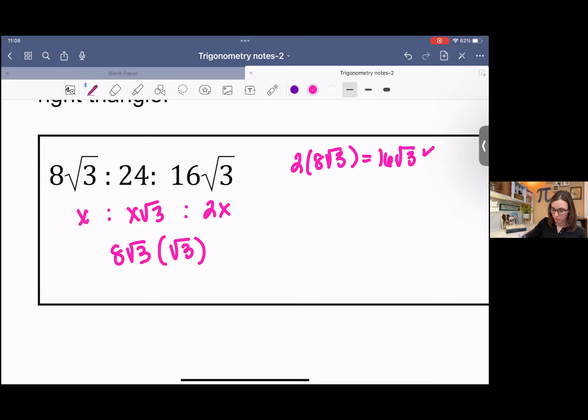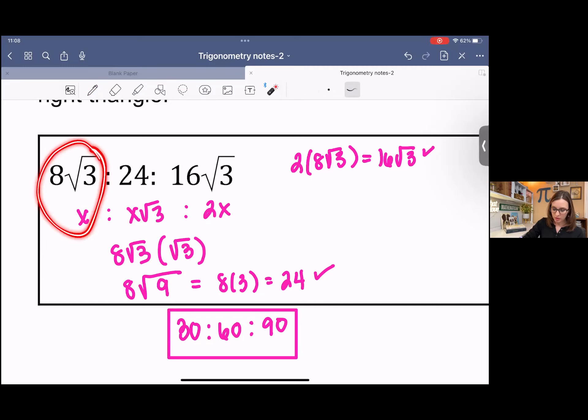So I'm going to do a little bit of manipulation here with algebra. Square root 3 times square root 3 is 9. Square root 9 is 3. 8 times 3 is 24. So it fits. This is a 30-60-90 triangle. Since we were given x, we could plug x into our ratio and see if it checked out. And it did. So there's that.